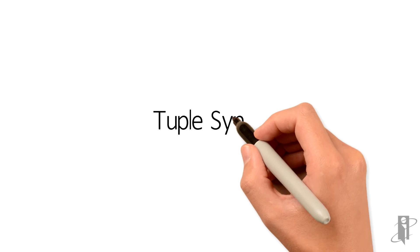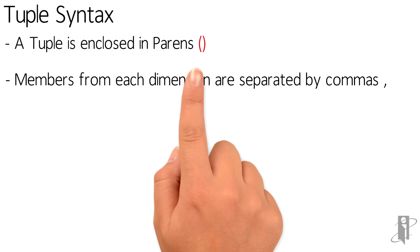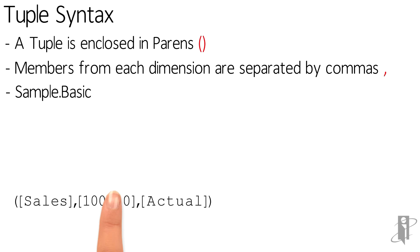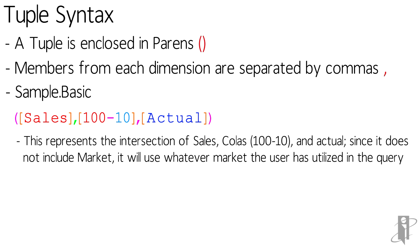So what is the syntax for a tuple? A tuple is enclosed in parens, and members from each of the dimensions are separated by commas. So for example, in Sample Basic, we have a tuple: open parens, Sales, comma, 100-10 which is Cola, comma, Actual. And this represents the intersection of Sales, Colas, and Actual.